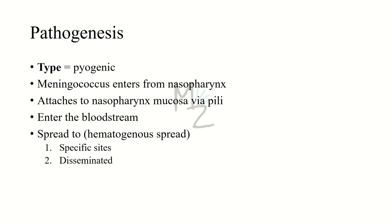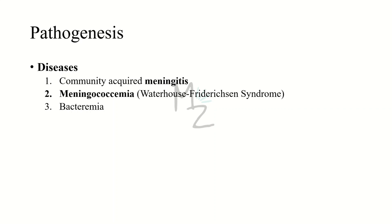When the meningococcus enters from the nasopharynx, it attaches to the nasopharyngeal mucosa via pili. It then enters the blood and spreads to specific sites such as the meninges or joints, or disseminates throughout the body causing meningococcemia. The most common disease caused is community-acquired meningitis, but it can also cause meningococcemia — the severe form being Waterhouse-Friderichsen syndrome.